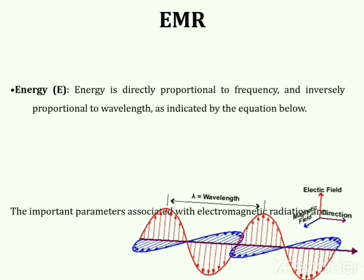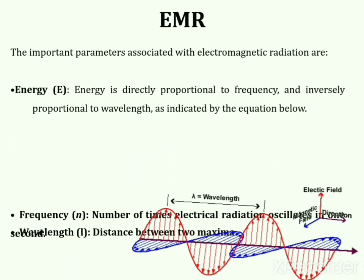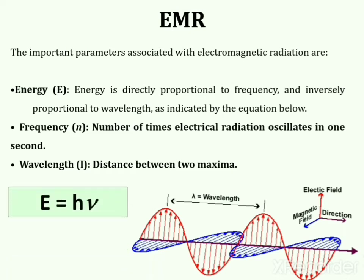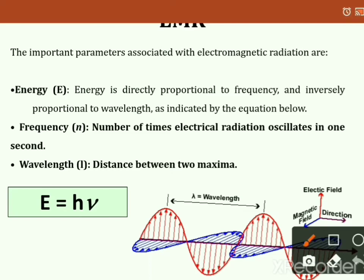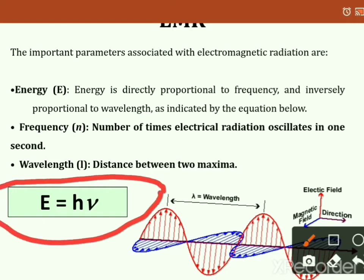There are various parameters associated with electromagnetic radiation, including energy E, frequency ν, and wavelength λ. Energy is directly proportional to frequency and inversely proportional to wavelength, given by the equation E = hν, where E is energy, h is Planck's constant, and ν is the frequency of radiation. Since ν = c/λ, substituting gives E = hc/λ, confirming that energy is inversely proportional to wavelength.